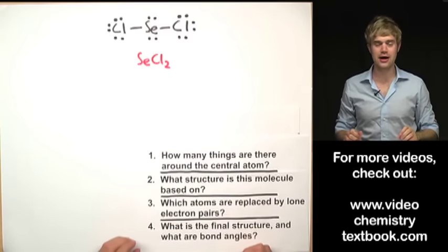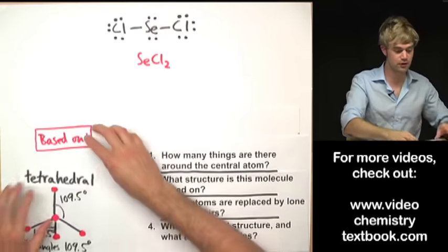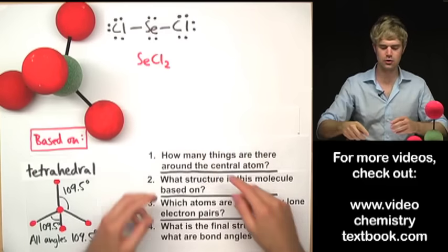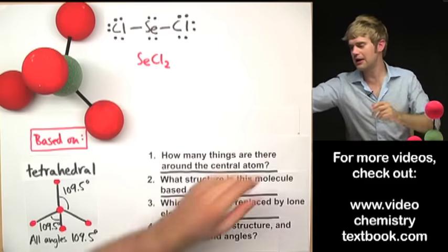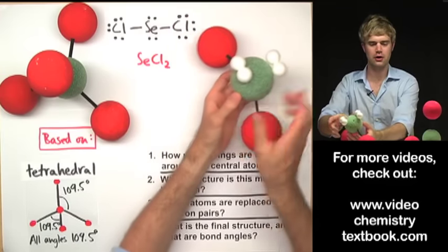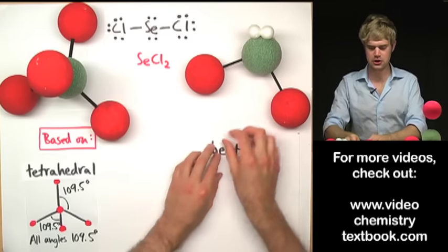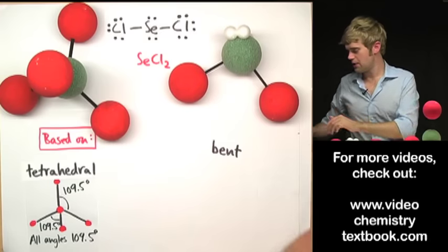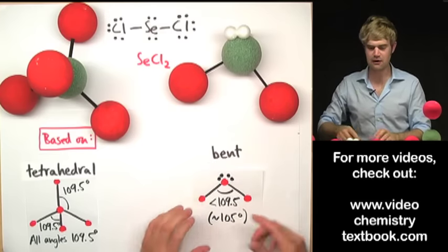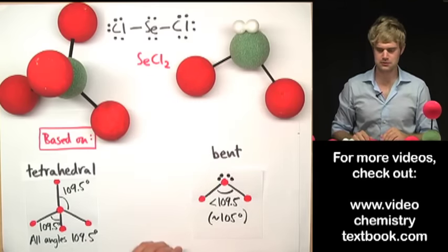SeCl2: how many things are around the central atom? Four things — two bonds and two lone electron pairs. So it's based on the tetrahedral shape. Two of the atom positions are replaced by lone electron pairs, giving a bent shape. The bond angles in this bent molecule are about 105 degrees because two lone electron pairs are pushing hard against the two atoms.